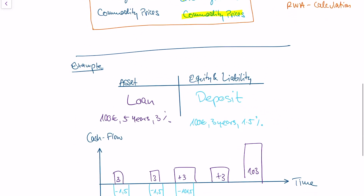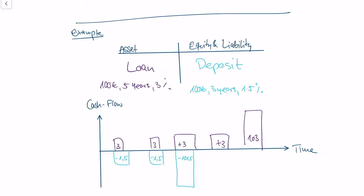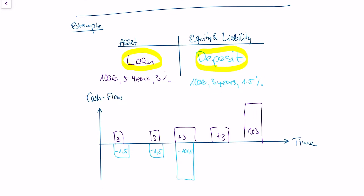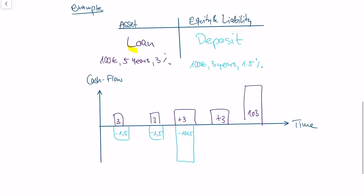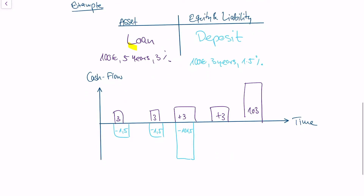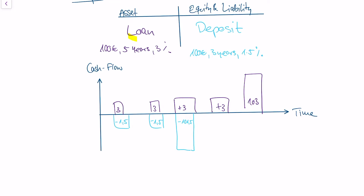Let's look at a very simple balance sheet of a bank. On the equity and liability side, we have a deposit, and on the asset side, we have a simple loan. The cash flow profile shows the loan is given out by the bank to a third party, who pays interest for four years and then pays back the loan in year five.